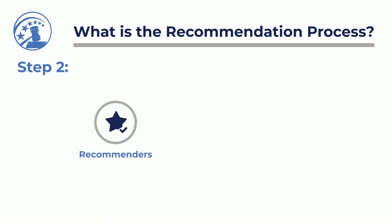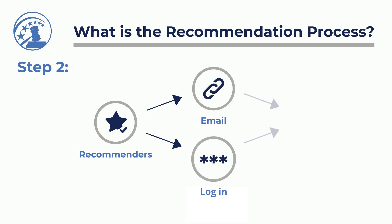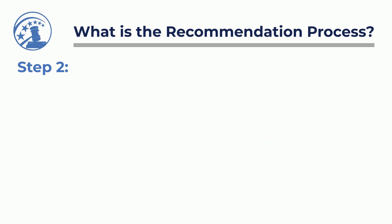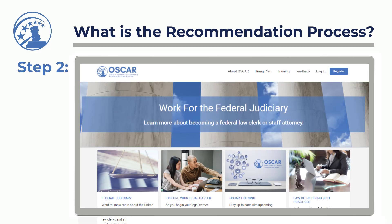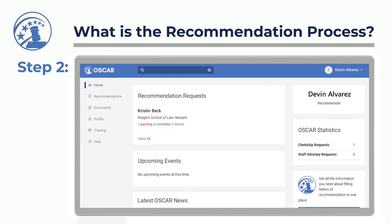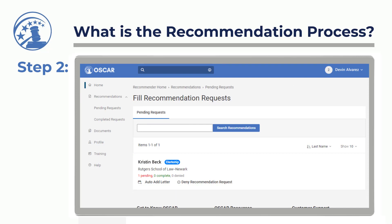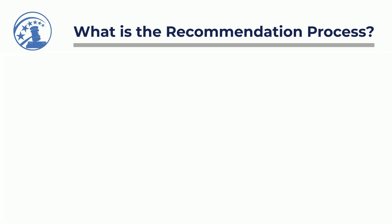Step 2: Recommenders use the link from the email or login to OSCAR to view a recommendation request. Using the email link allows you to go directly to submitting the requested letter of recommendation. Recommenders can also log into OSCAR to view pending recommendation requests. On the left navigation, select the Recommendations drop-down and click Pending Recommendations. For each applicant, OSCAR displays the number of pending, complete, and denied recommendation requests. To submit a recommendation letter, select the name of the applicant associated with the pending recommendation request. To deny a recommendation request, click Deny Recommendation Request.